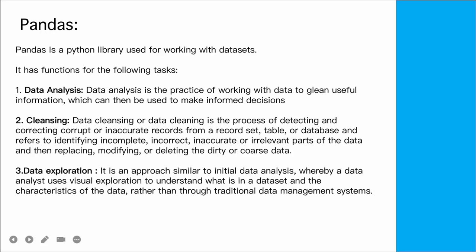The second task is data cleansing. Data cleansing or data cleaning is the process of detecting and correcting corrupt or inaccurate records from a record set, table, or database. It refers to identifying incomplete, incorrect, inaccurate, or irrelevant parts of the data, and then replacing, modifying, or deleting the dirty data. We correct wrongly processed data, such as rows with empty values.